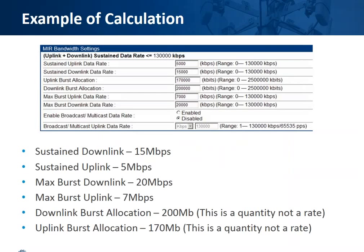Looking at this example taken from the MIR settings on the SM, the first two columns — sustain uplink and sustain downlink — are set for 5 megs and 15 megs respectively. The uplink burst allocation is set to 170 megabits and the downlink burst allocation is set to 200. The biggest thing to remember is that the allocation is not a rate, it's a quantity — this is the amount that's filling the bucket. Then we have our max burst uplink and downlink data rate set to 7 megs and 20 megs respectively.